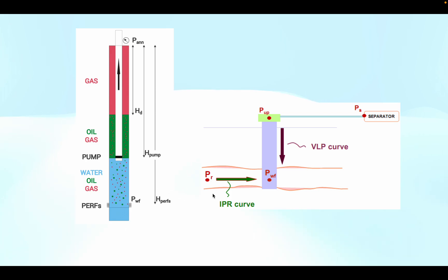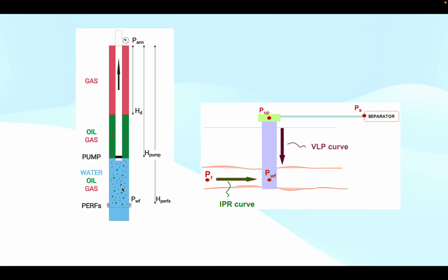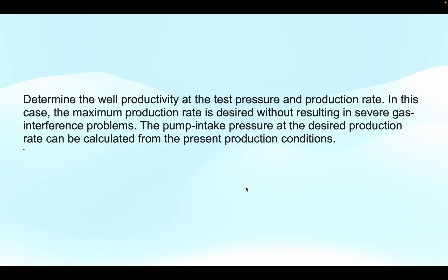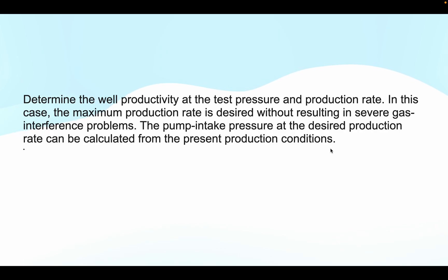This picture explains the IPR and the flowing pressure performance. This also shows the pump intake from here, and the preparation outside. This is the flowing pressure, this is the flow pressure, this is pressure, and this is PR — this is the temperature. We determine the well productivity at the test pressure and production rate. In this case, the maximum flow rate is desired without resulting in severe gas interference problems. The pump intake pressure at the desired production rate can be calculated from the present production condition.